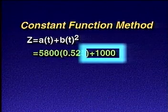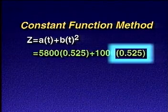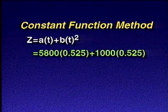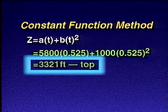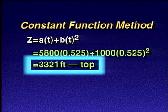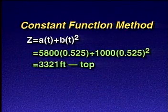Plus a second constant, say 1,000, again times 0.525 squared, which gives us a depth of 3,321 feet to the top of the zone.